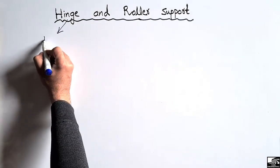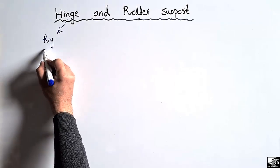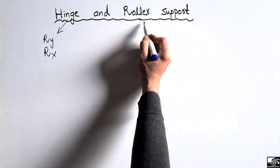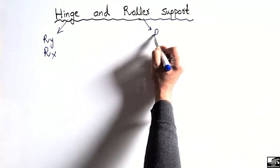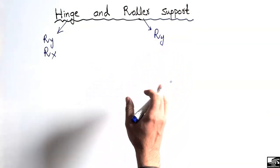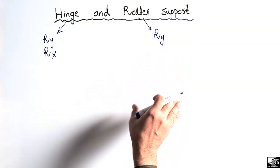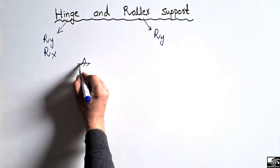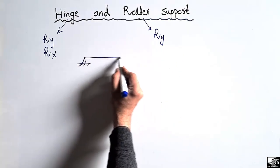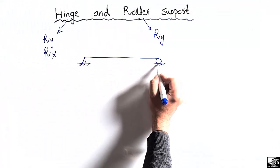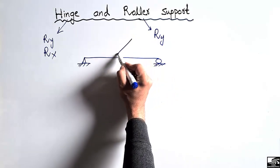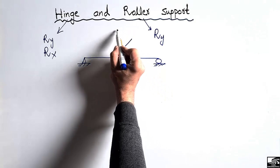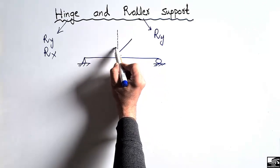The hinge support is the type of support where it can resist the vertical load and also the horizontal load, while the roller support can only take the vertical load — it cannot take any horizontal load. If we consider any beam, let's consider this is a simply supported beam and there is an inclined load acting on this beam, so it will have two components: one vertical and one horizontal.